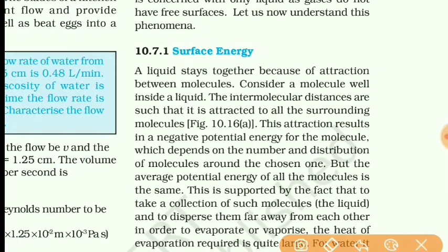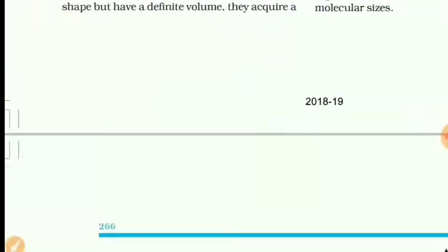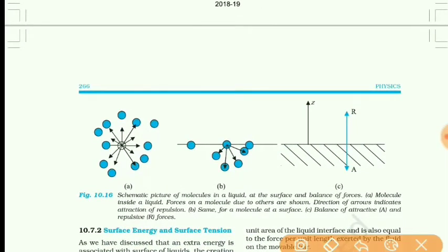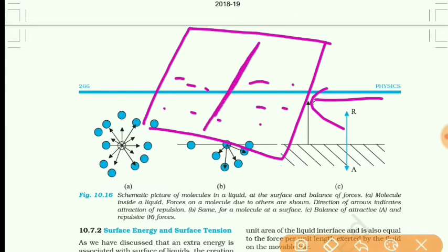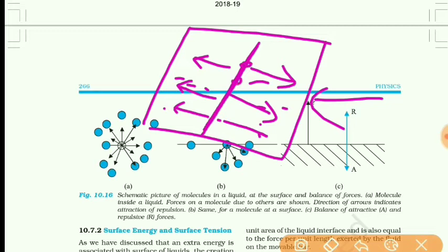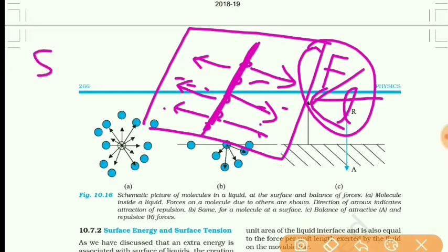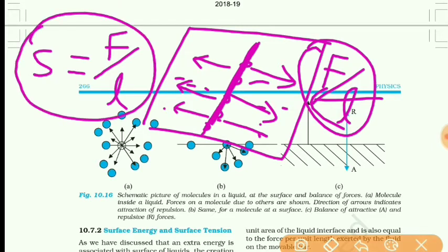Now, about surface energy. If there is a liquid surface and we draw an imaginary line on the surface, a force acts on both sides of this line, keeping all particles on the surface stationary. If we consider the force per unit length, then this force per unit length is nothing but surface tension. So S = force per unit length. Remember this formula for surface tension in terms of force and length.